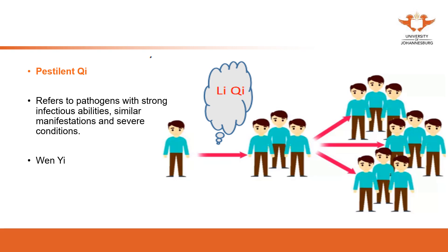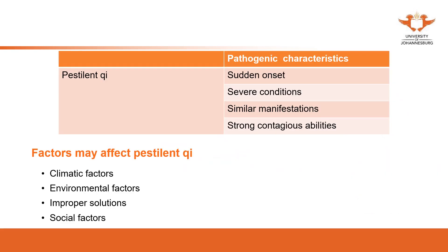There was one practitioner called Wu Yu Ke who said that Pestilence Qi — the different kinds of qi — are different from the six exogenous pathogens. It's not wind, not coldness, not summer heat, not dampness. So practitioners realized these diseases were something different. Although they didn't know exactly what they were — nowadays we know there are viruses — at that time they grouped all these kinds of viruses together because they shared similar manifestations.